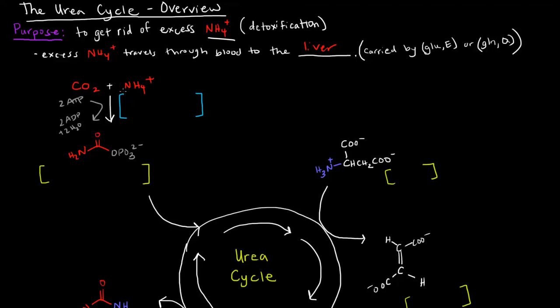So now, once it's in the liver, the excess ammonium will join carbon dioxide and along with some ATP to make this molecule here, which is called carbamoyl phosphate. So this carbamoyl phosphate, the red portions that I've drawn, the amino group here and this carbonyl group come from the ammonium ion and the carbon dioxide, respectively. And this phosphate comes from the ATP.